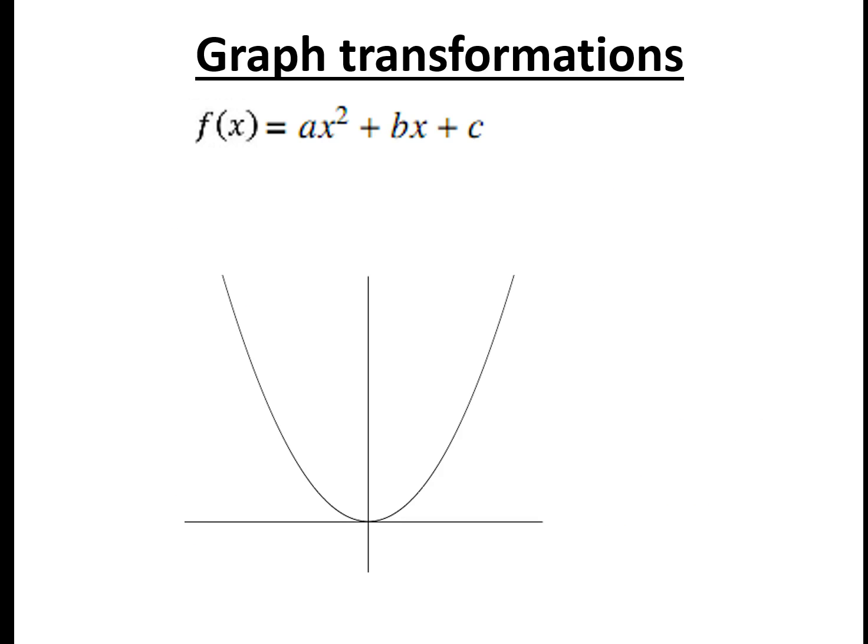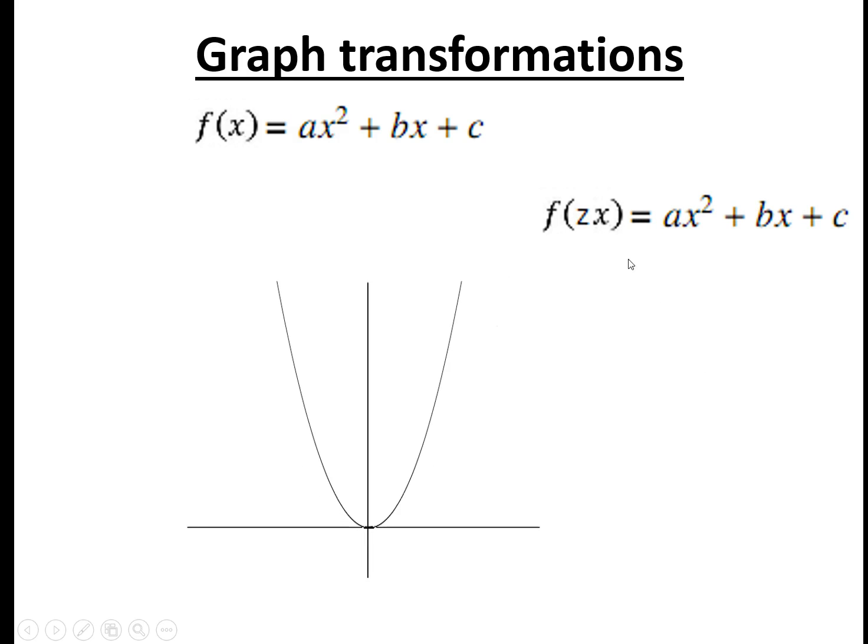You also need to know how graphs are transformed. So if you take this x squared graph, and if you do f of zx, so changing from what it looks like here to f of zx, this means it will shrink, like contracts along the x axis, so it gets a lot narrower.